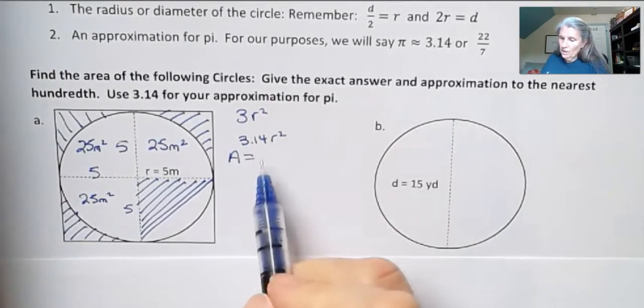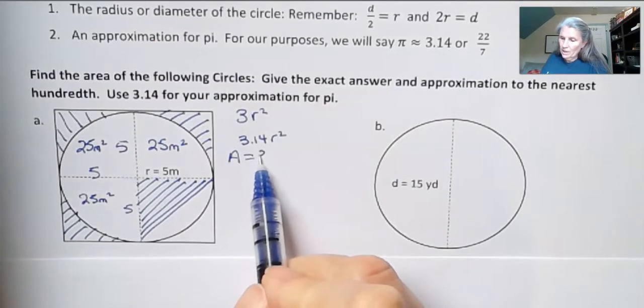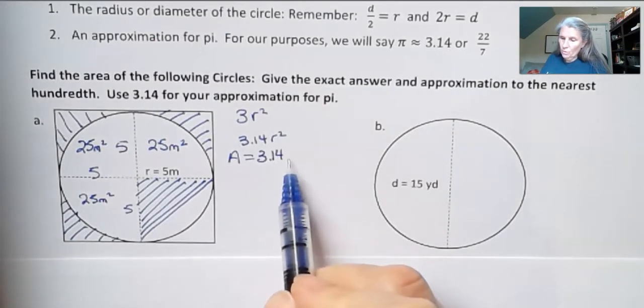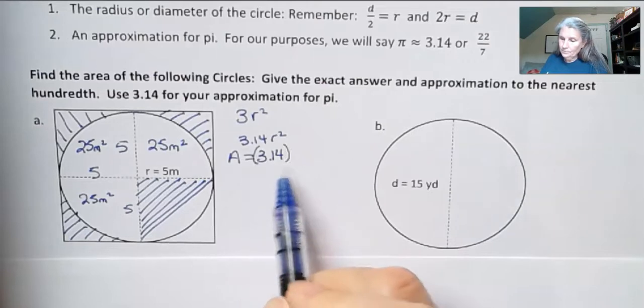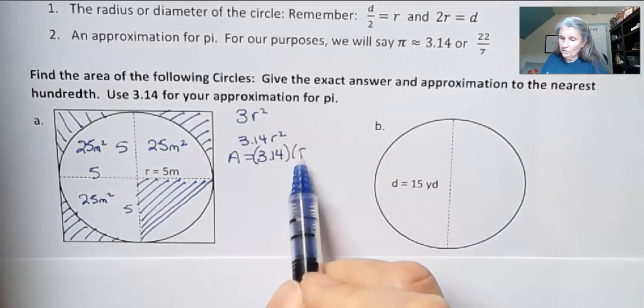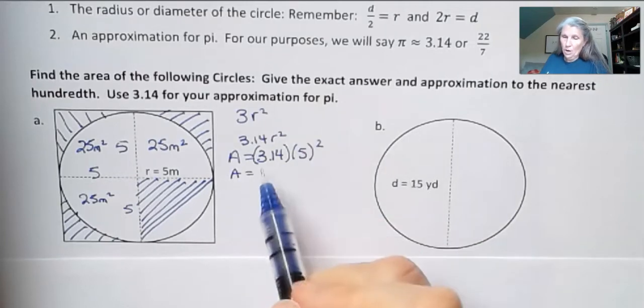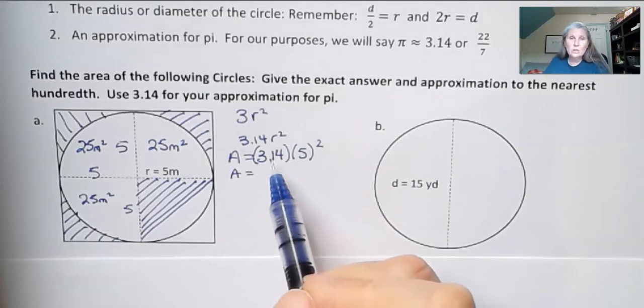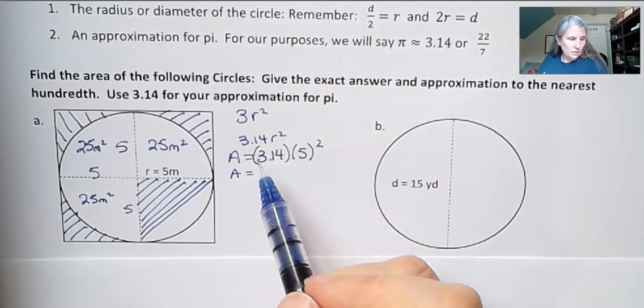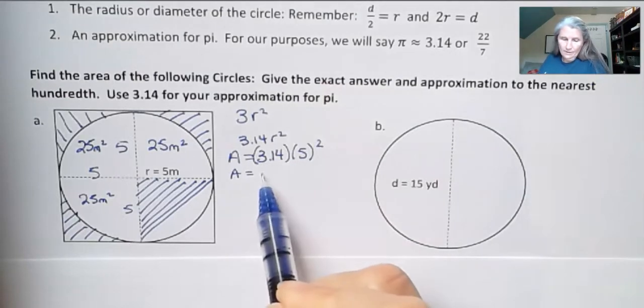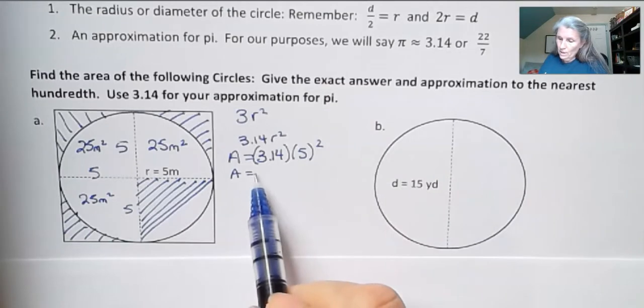So the area equals pi r squared. And I'm going to use 3.14 for pi. And then we have 5 squared. And that is, this is going to be the approximation because I'm actually using that approximate number, right? And 5 squared is 25 times 3.14.